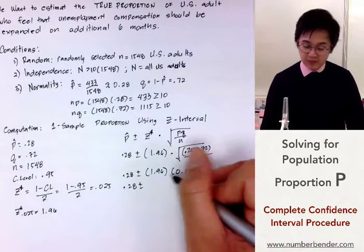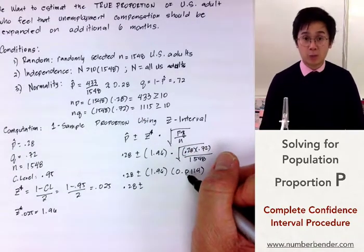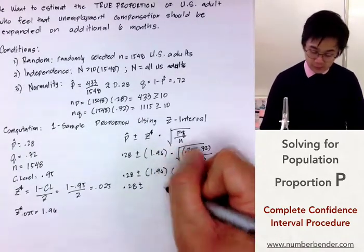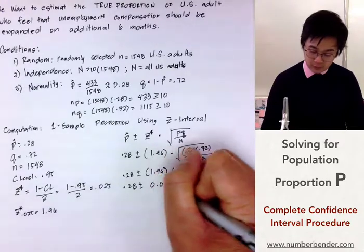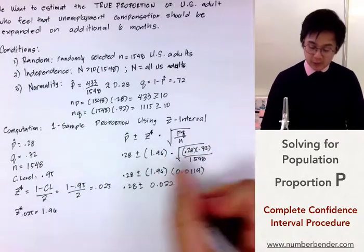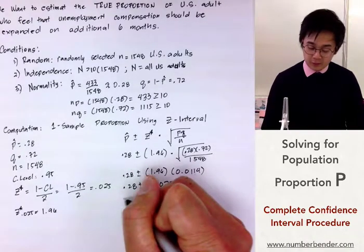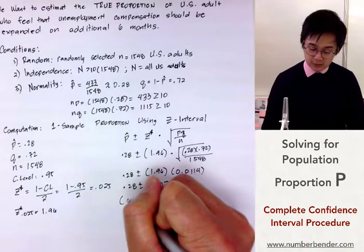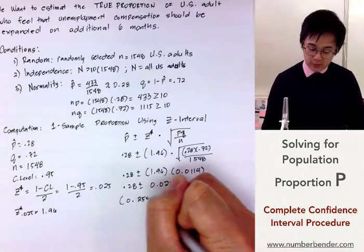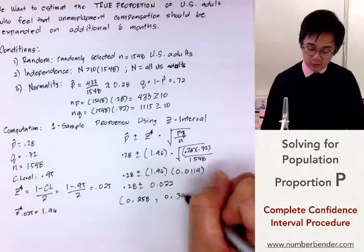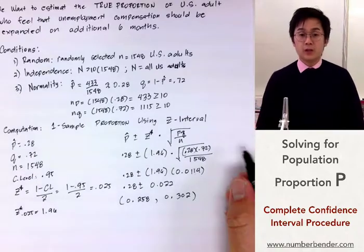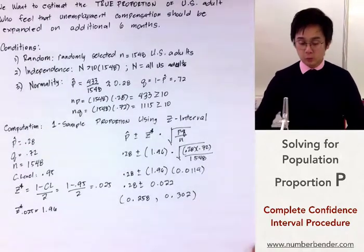When we multiply these two together, which is going to be our margin of error, we get 0.022. Now that we have these values, we can find the confidence interval, which is going to be 0.258 and 0.302.